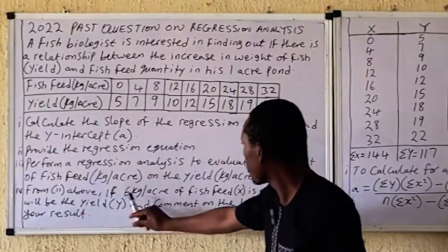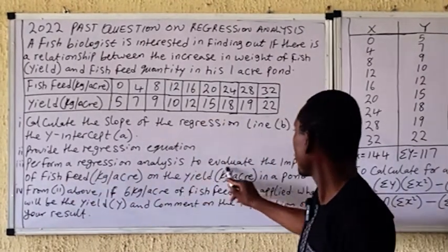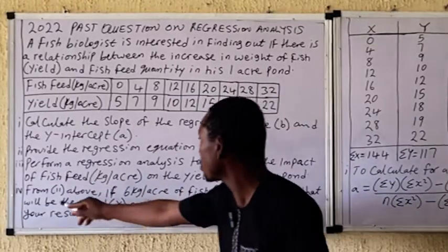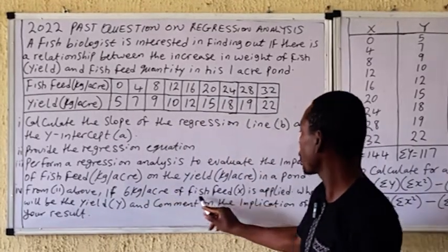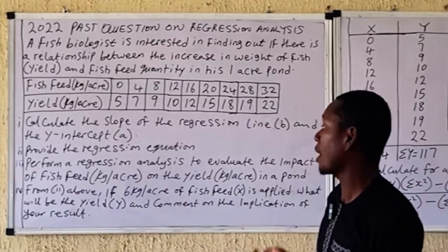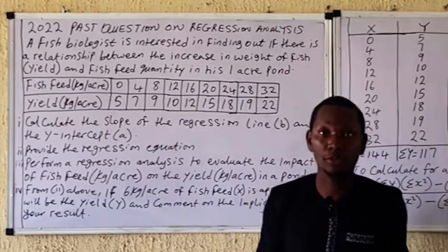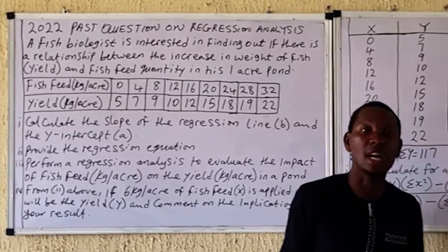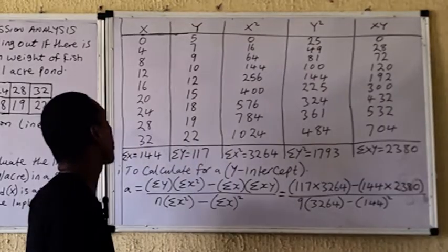The question asks you to perform regression analysis to evaluate the impact of fish feed on the yield of fish. Then from part two, if six kg per acre of fish feed is applied, what will be the yield? I want to go through the question so you get an idea of how to apply regression analysis in statistics and research.